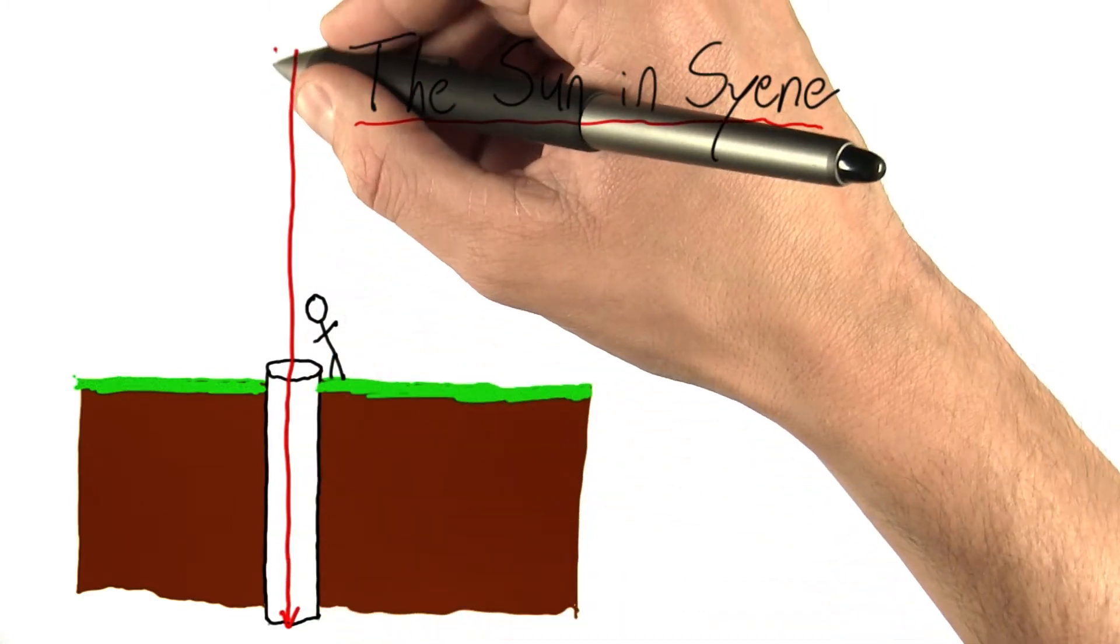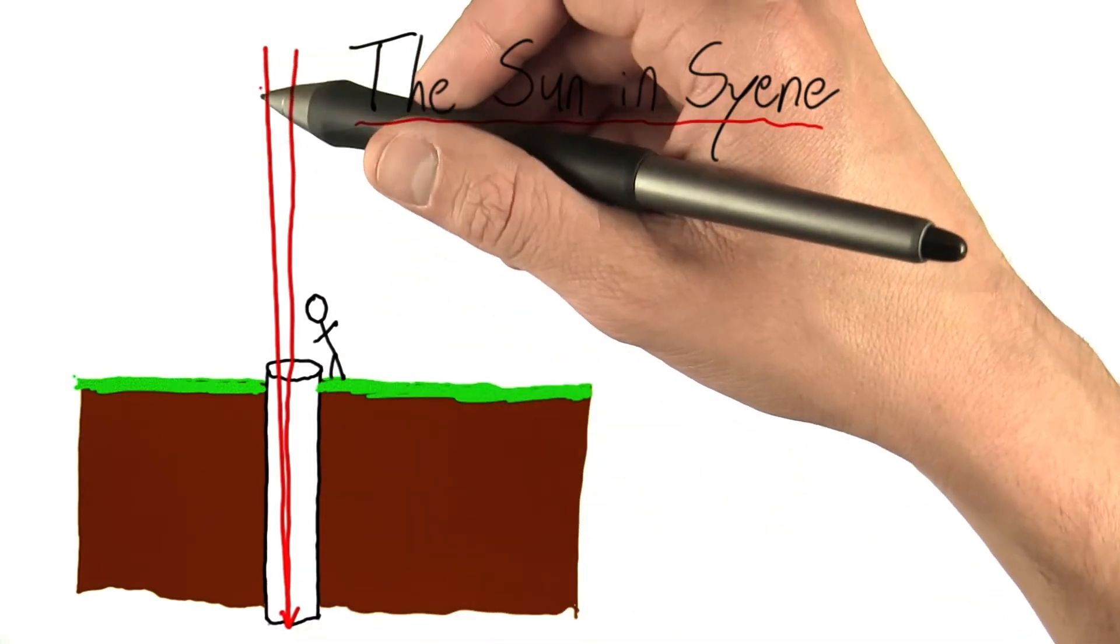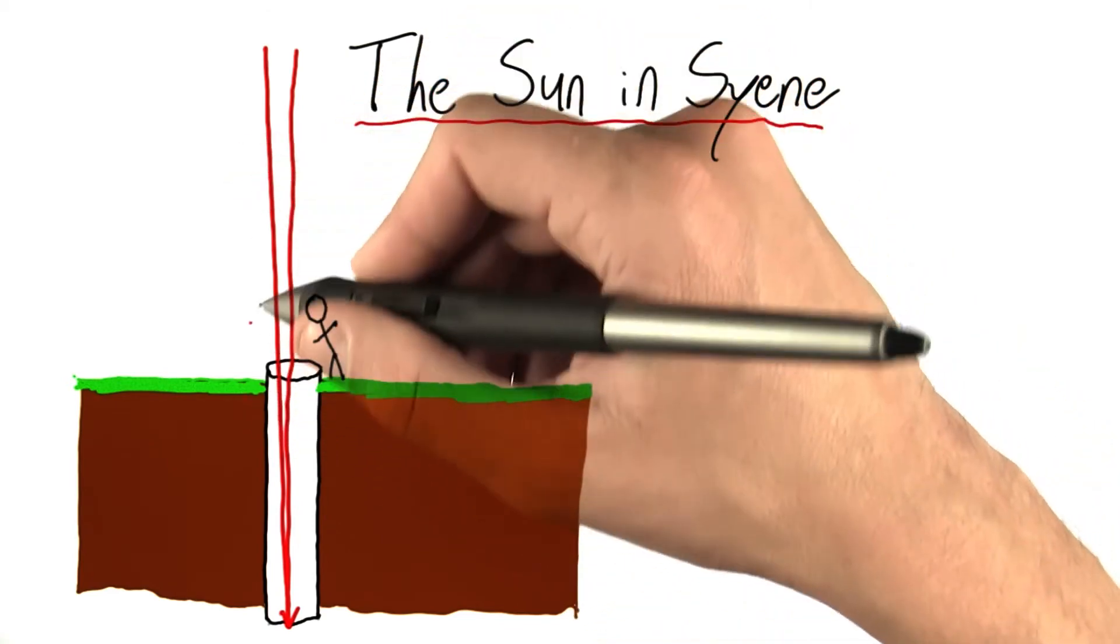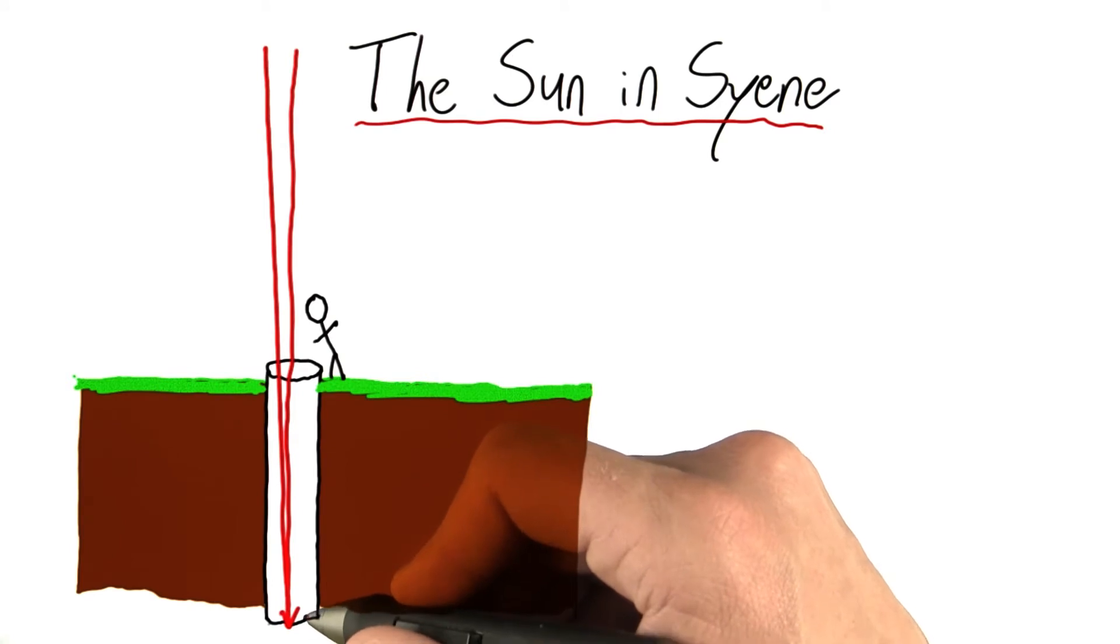What about this one? This ray also illuminates the bottom of the well, and it comes in at a slight angle. Now, let's look at what the maximum possible angle could be that would allow one of these rays to enter the top of the well and still illuminate the ground below.